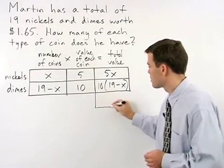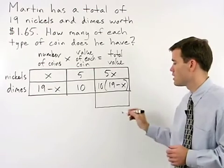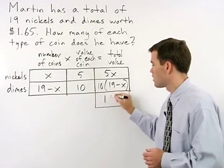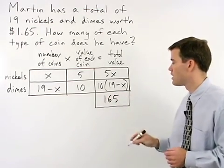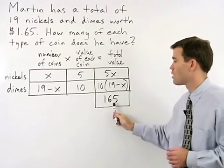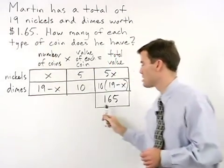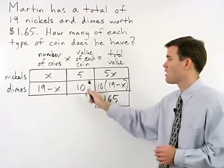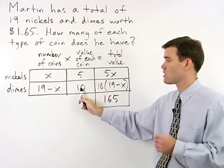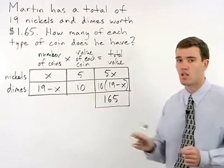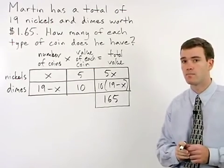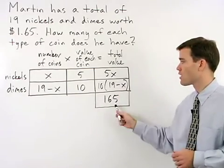So down here we're going to add another box and inside we're going to put 165 cents. Notice I wrote $1.65 in terms of cents because our value of nickels and value of dimes is also written in terms of cents and we need to be consistent. So here's our equation.